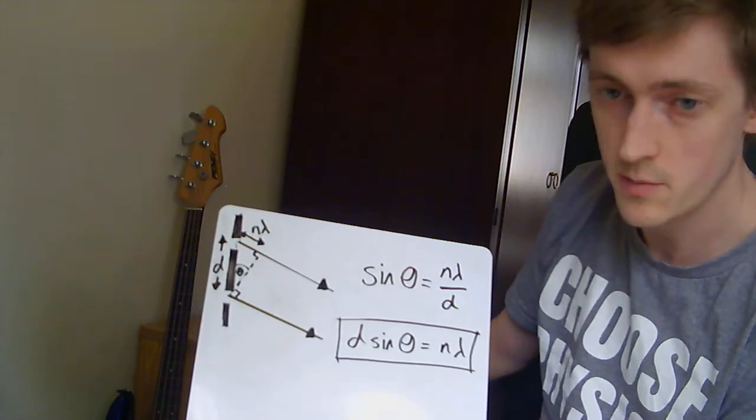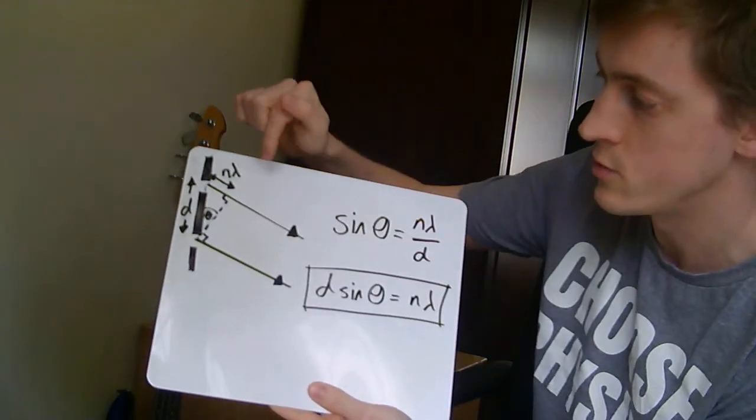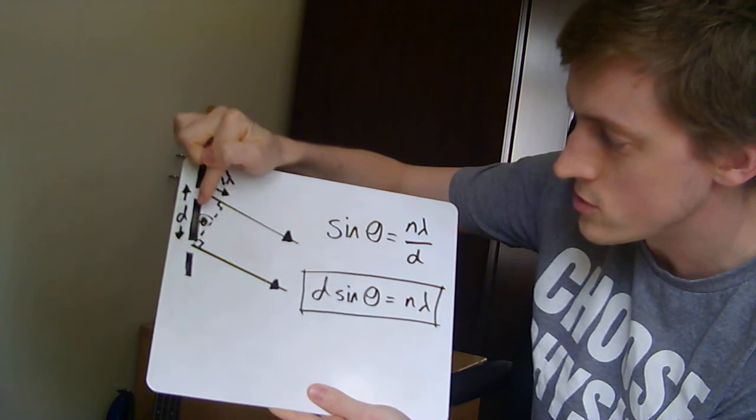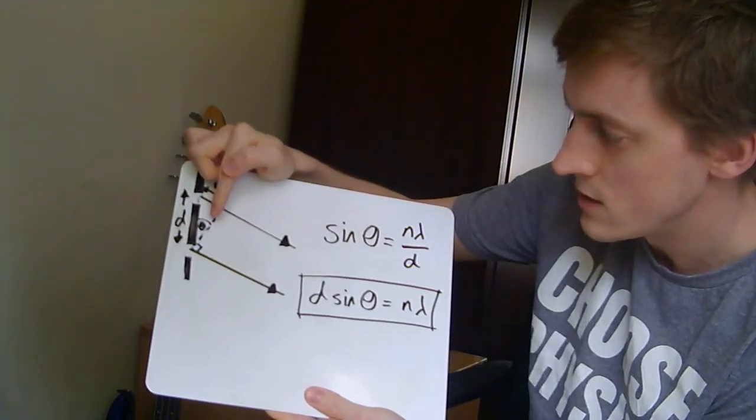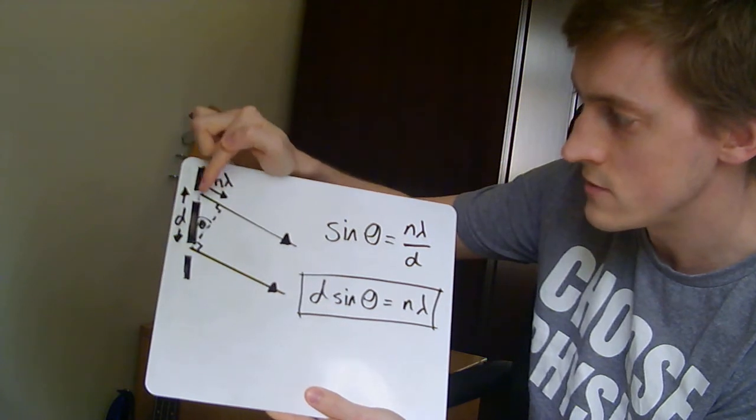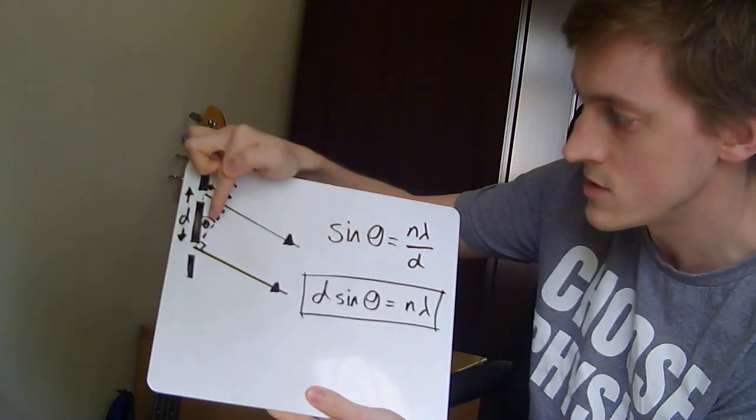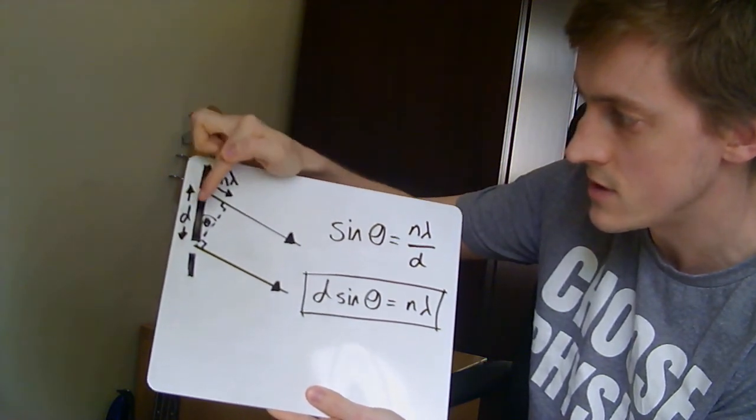So this then becomes a bit of trigonometry. It's a pretty straightforward process. We've got a right-angled triangle here, and we know that the sine of the angle here is going to be equal to the opposite divided by the hypotenuse. In other words, sine theta is n lambda over d.